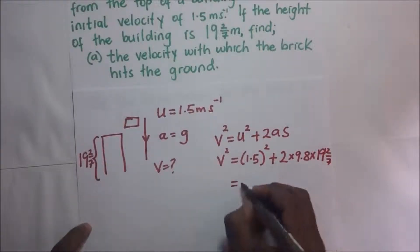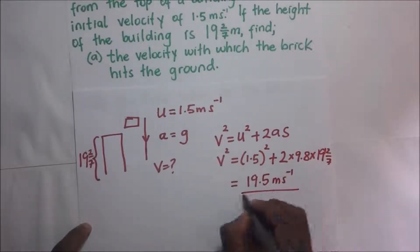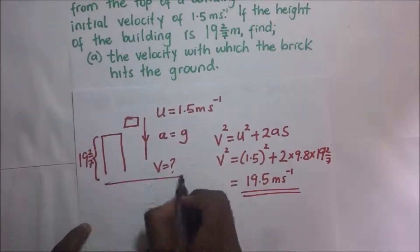So our answer will be 19.5 meters per second. That is the velocity with which it hits the ground.